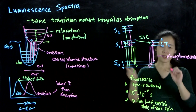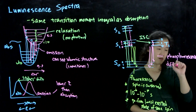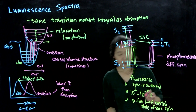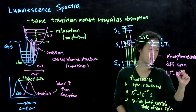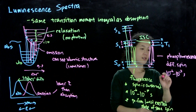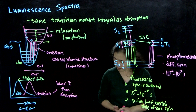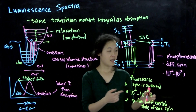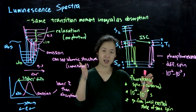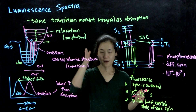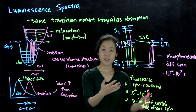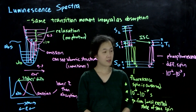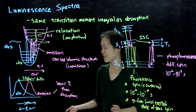Because we're going from triplet to singlet — different spin — this is spin-forbidden, so the lifetimes of these excited states are actually quite long, decaying on the order of 10 to the minus 6 to 10 to the minus 3 seconds — much, much slower than fluorescence. You can distinguish them using time-resolved experiments: you excite and then measure photons as they decay, and the timescale of that decay can tell you if it's fluorescence versus phosphorescence. That's really the basics of luminescence spectroscopy.